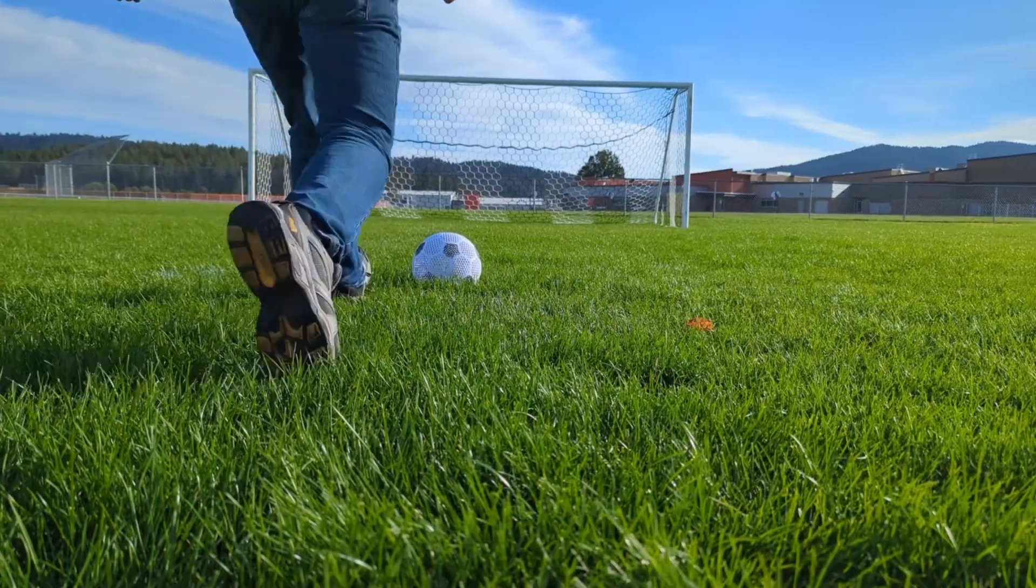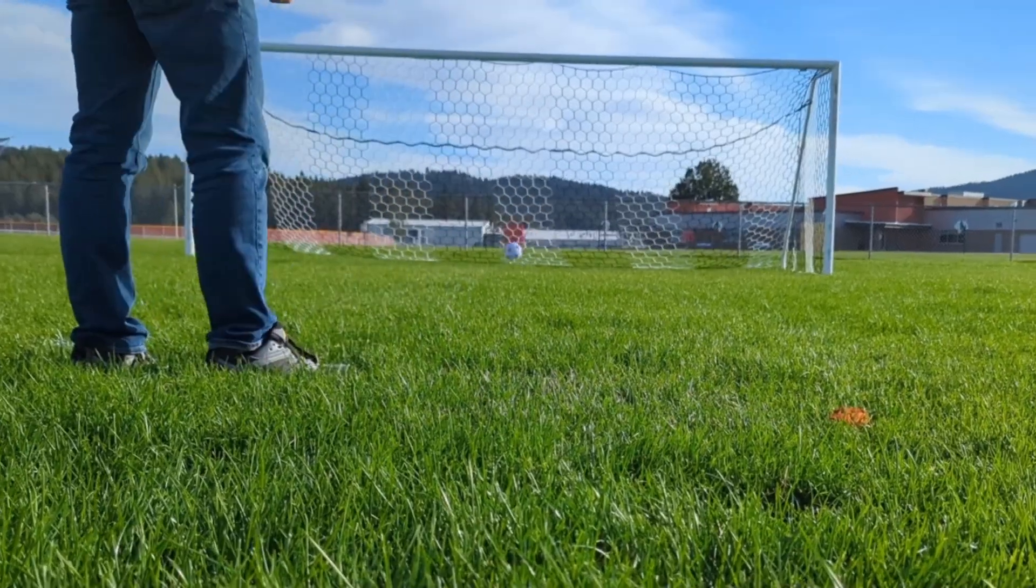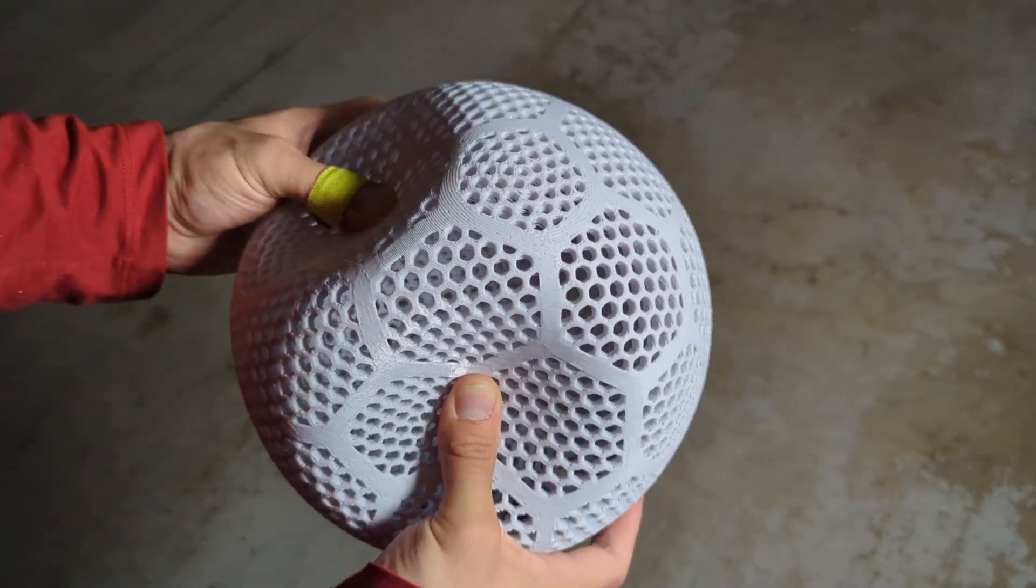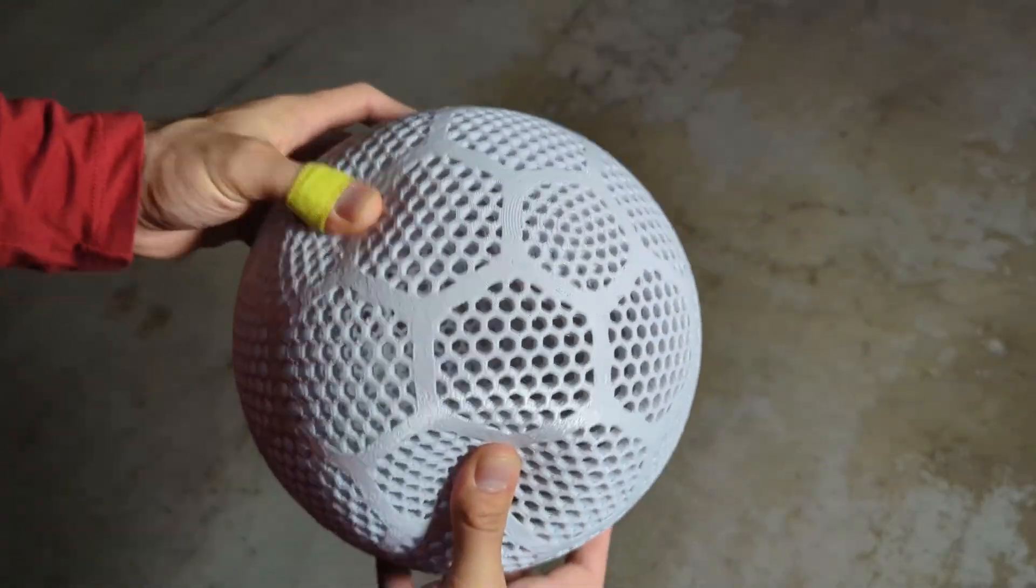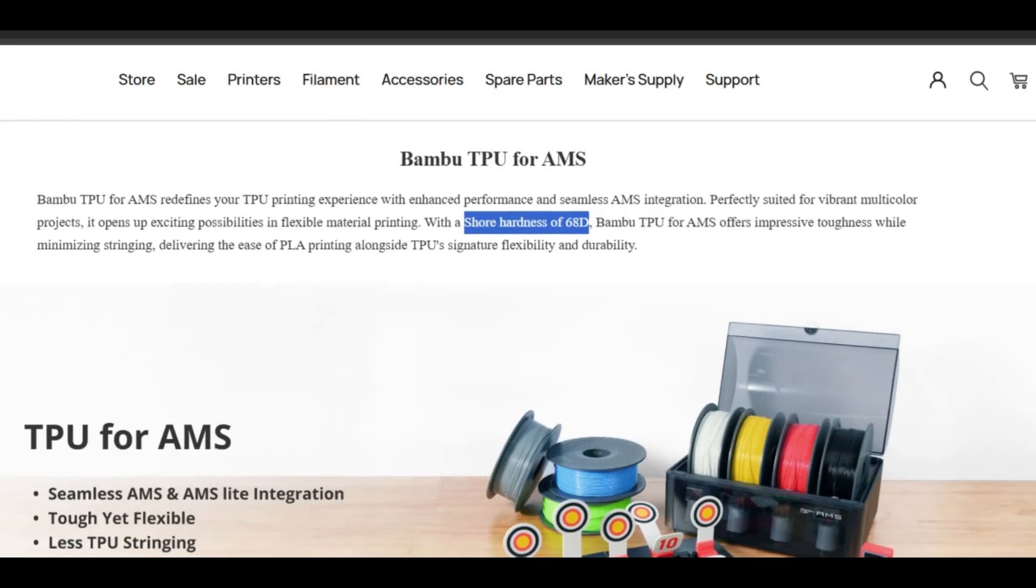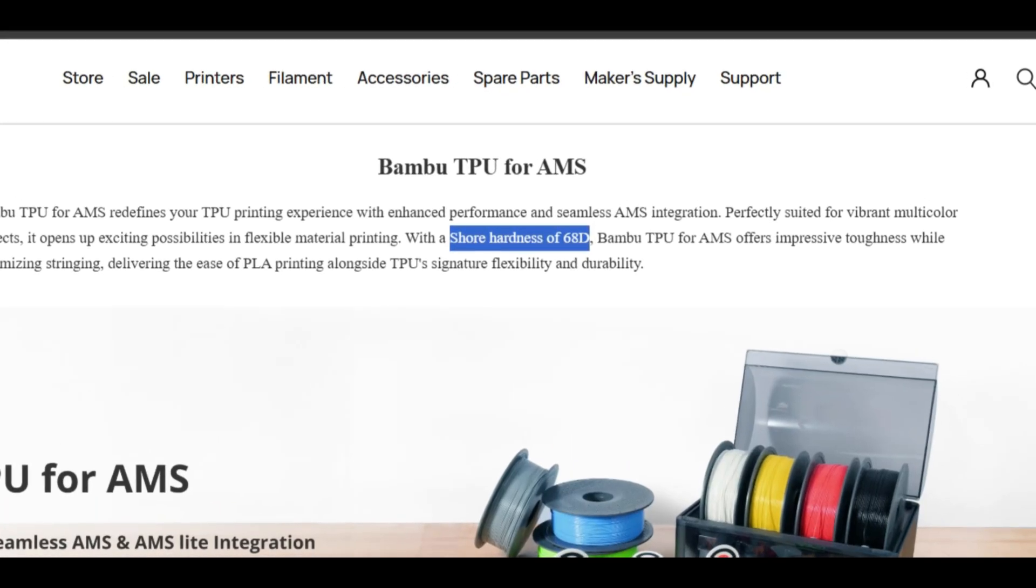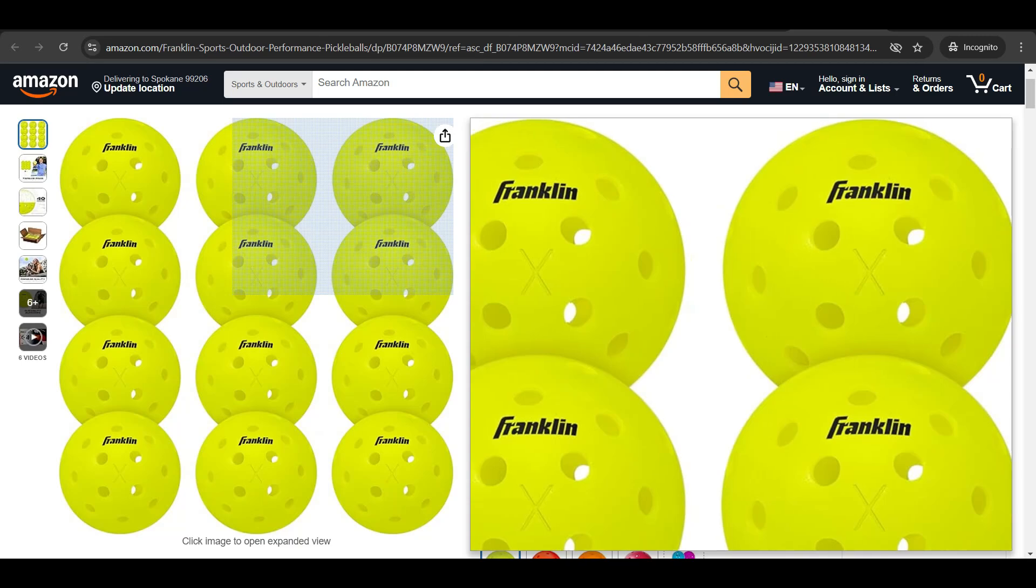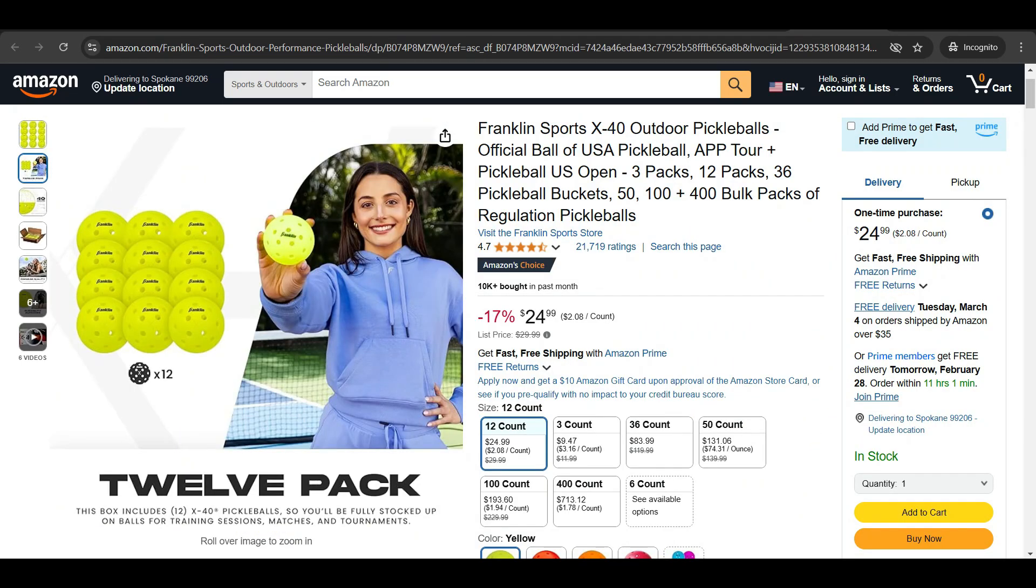is that most of them are just way too squishy to actually make something that would perform well as a soccer ball. And with the hardness rating of 68D, this filament might actually be a decent option for a single lattice soccer ball. The other thought that I had for it was maybe using this stuff to make a pickleball or an airless tennis ball. I'm not sure which way to go yet.